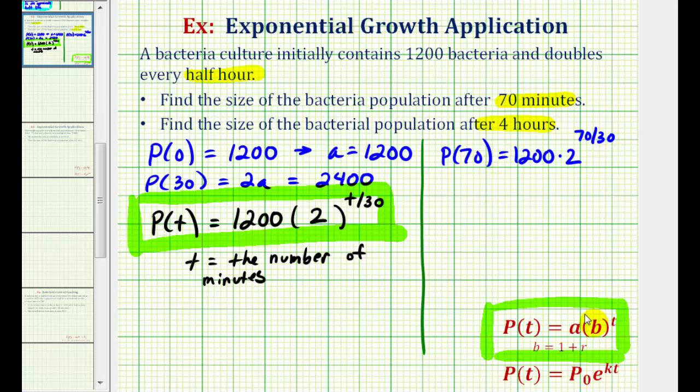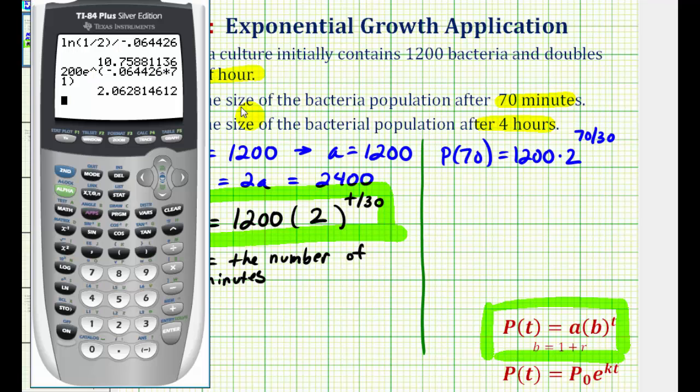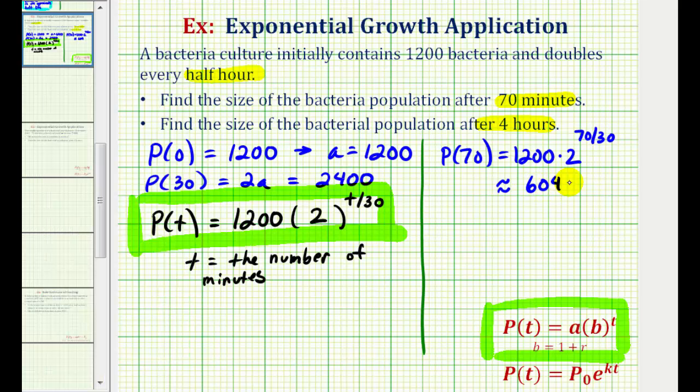Let's evaluate this on the calculator. Okay, 1,200 times two raised to the power of, again, this simplifies to 7 thirds. So if we round to the nearest bacteria, there would be approximately 6,048 bacteria after 70 minutes.